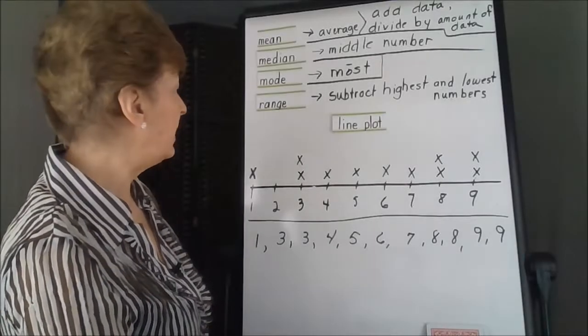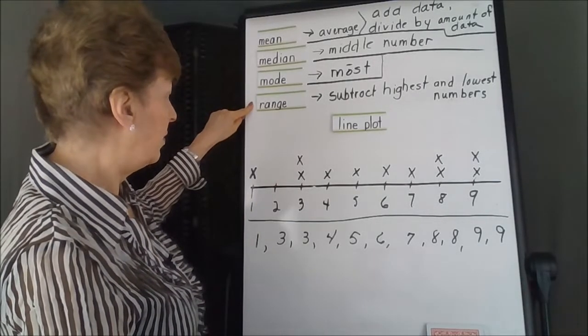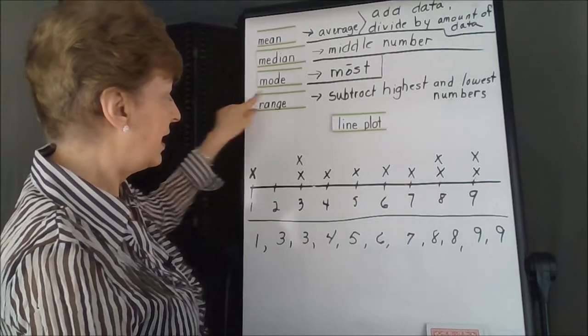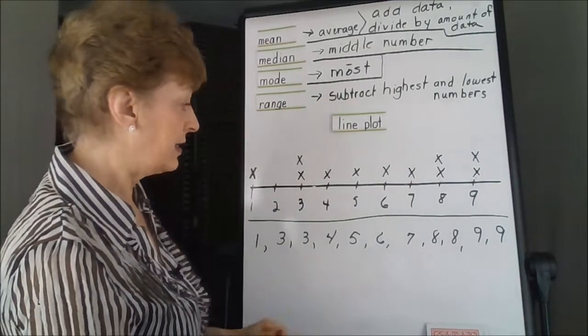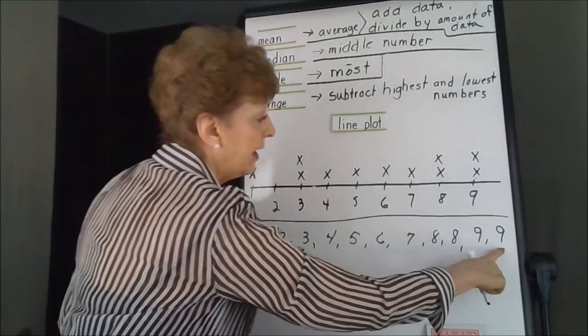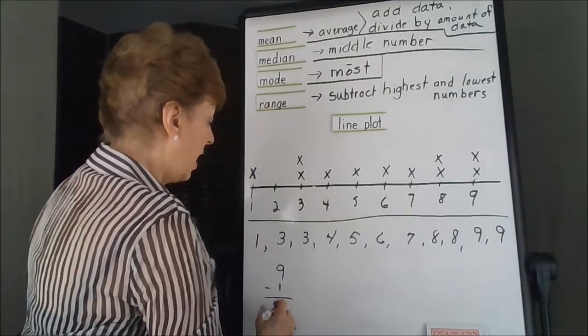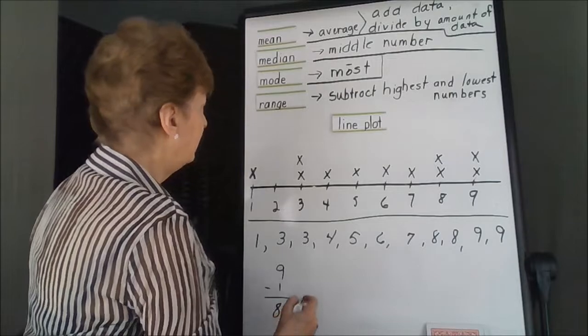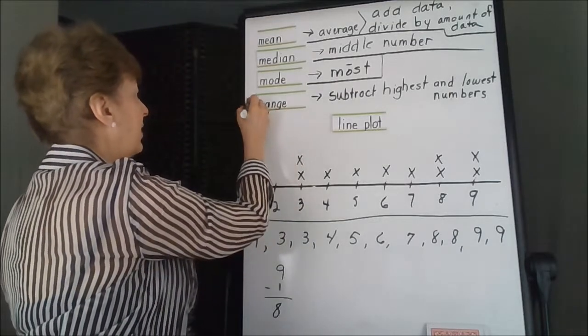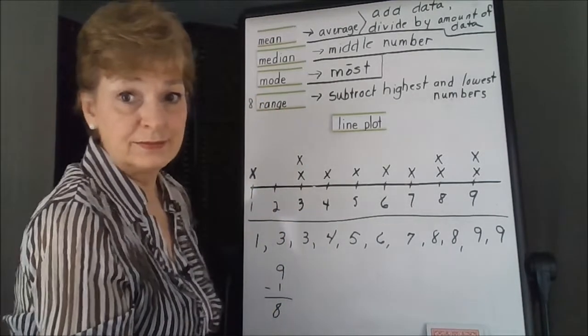Why don't we start out with something easy. The range of this is the subtraction of the highest and the lowest. So we're going to have 9 take away 1. Our range would be 8. So in this case we have an 8 as our range, not too hard.